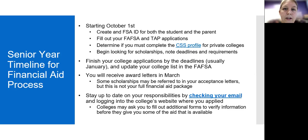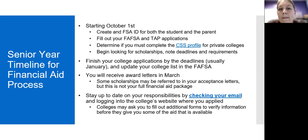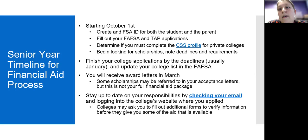Your timeline for senior year: starting October 1st, create your FSA ID for both student and parent and fill out your FAFSA and TAP applications. Also determine if you need to complete the CSS Profile for private colleges, and begin looking for scholarships, noting deadlines and requirements. Make a list of all the scholarships you're interested in and their deadlines. If you miss a deadline, keep it on your list and check if they offer it to college students as well — hold on to your list and apply the following year.